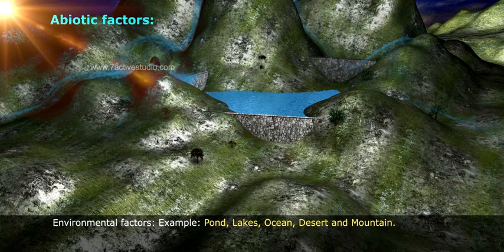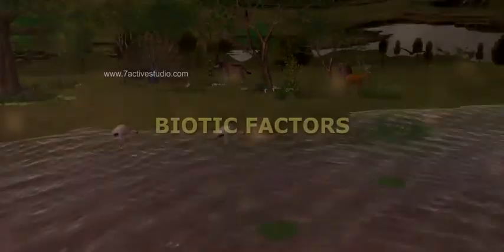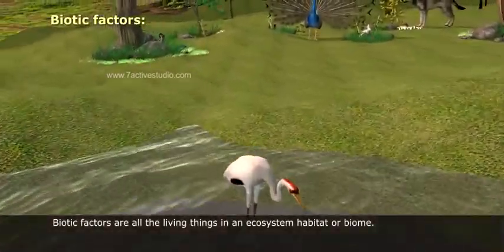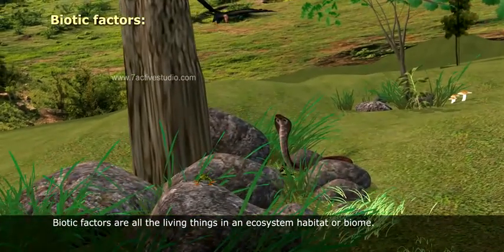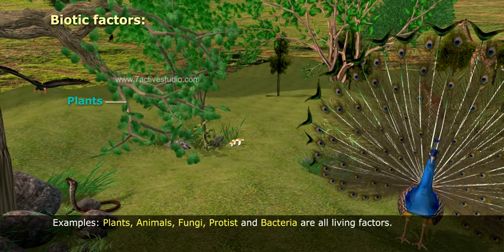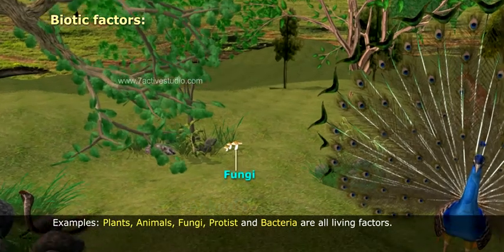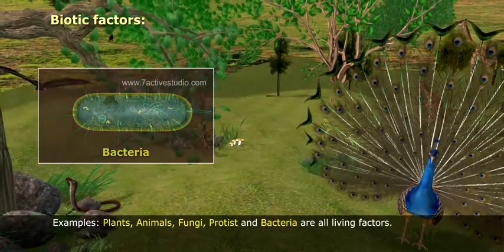Environmental factors include examples such as pond, lakes, ocean, desert, and mountain. Biotic factors are all the living things in an ecosystem, habitat, or biome. Examples include plants, animals, fungi, protists, and bacteria.